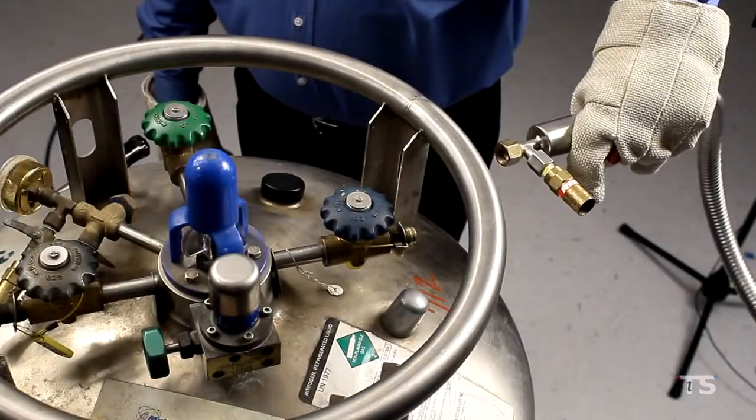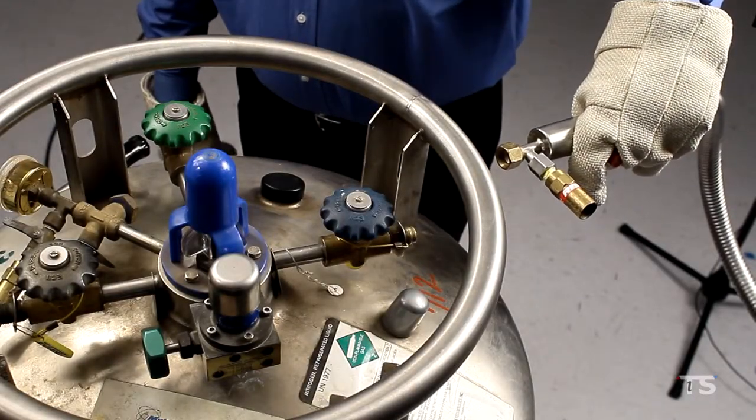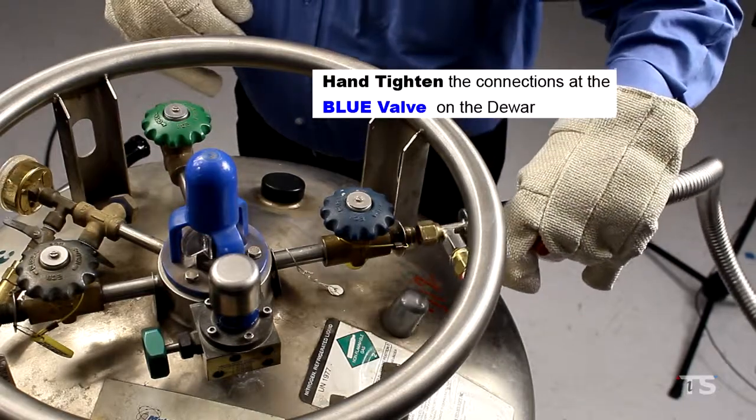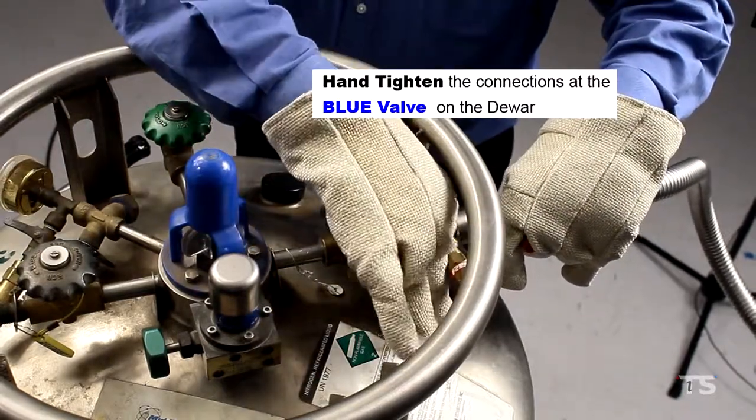We will start by hand tightening your coolant lines at the Dewar and chamber. First, hand tighten the connections at the blue liquid valve on your Dewar.